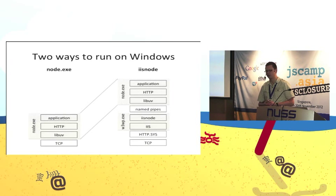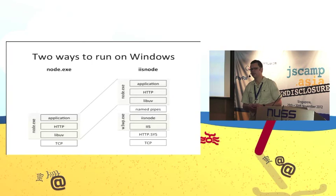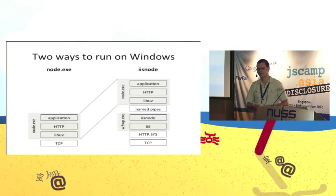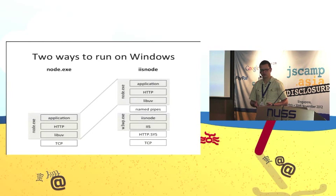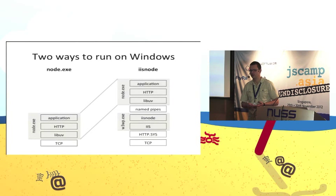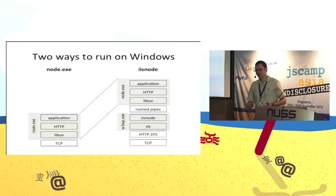On Windows you also have a different way of running Node.js apps called IIS Node. IIS Node allows you to host Node.js applications inside Internet Information Services, which is Microsoft's web server on Windows. In the case of IIS Node, the incoming TCP connection is first handled by HTTP.sys — a kernel mode HTTP implementation built into Windows. HTTP.sys hands the request to IIS, and IIS Node relays that HTTP request to a Node.exe process over named pipes.